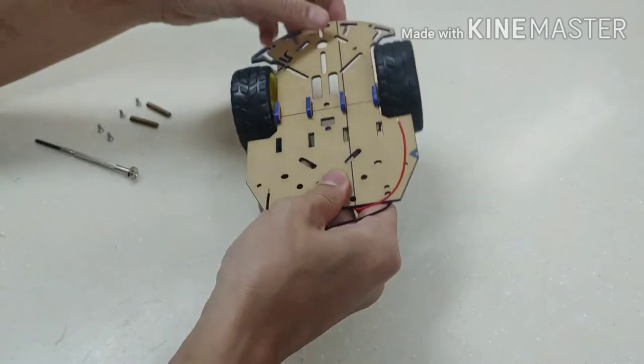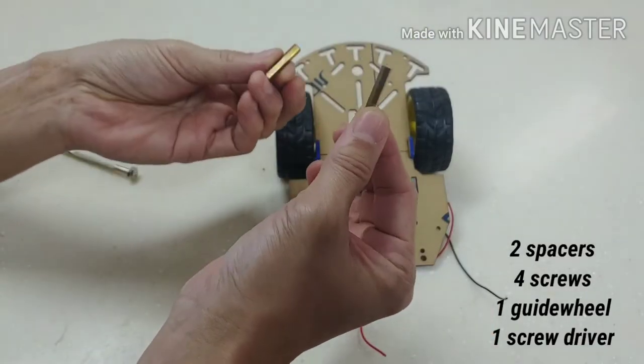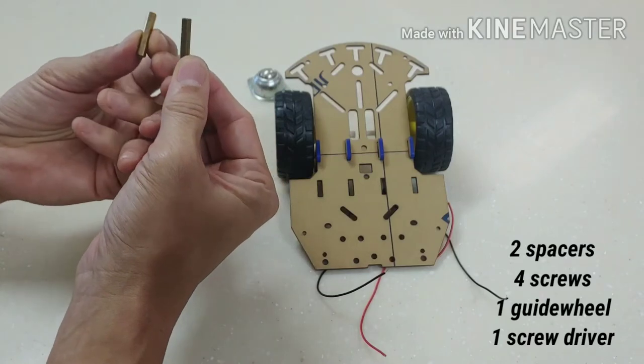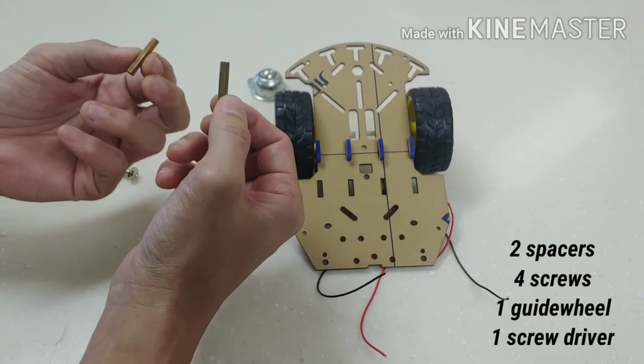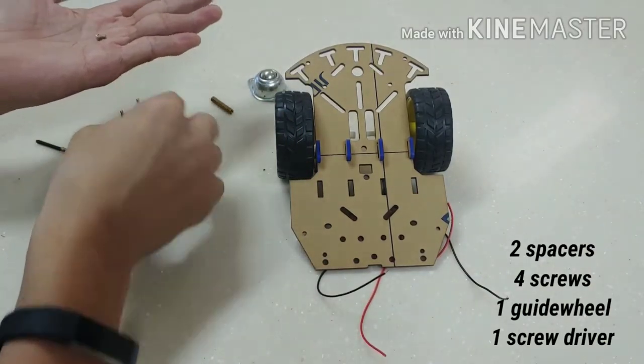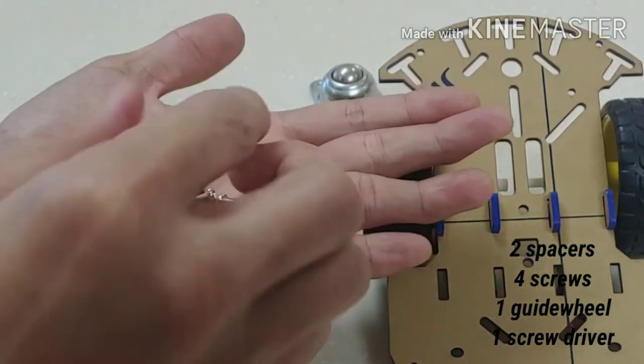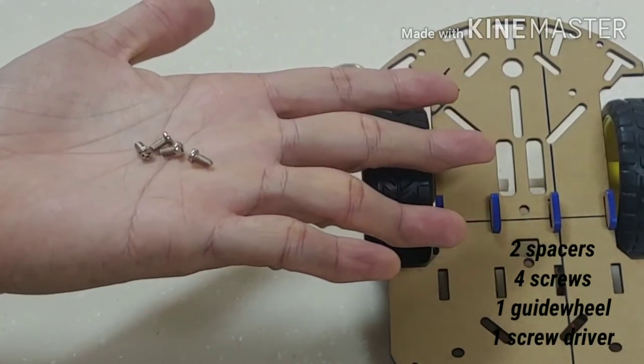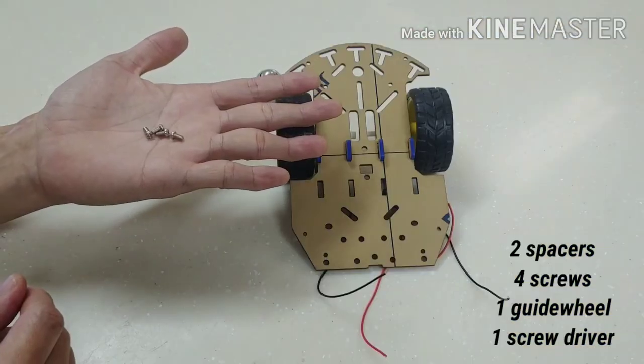You will need two spacers like these. These metal rods are called spacers because they create space. And you'll need four of these small little screws - count them, one, two, three, four. Don't be confused with the long ones, these are the short ones.